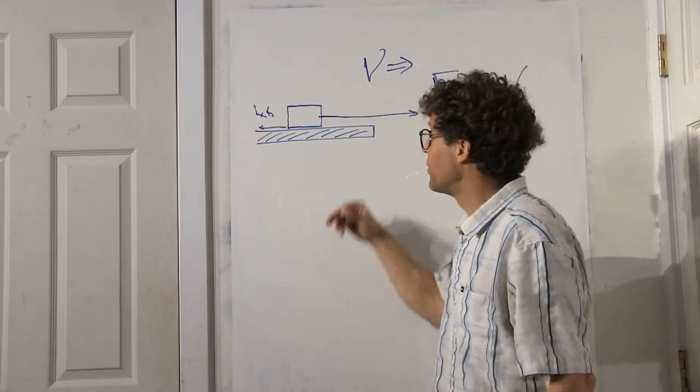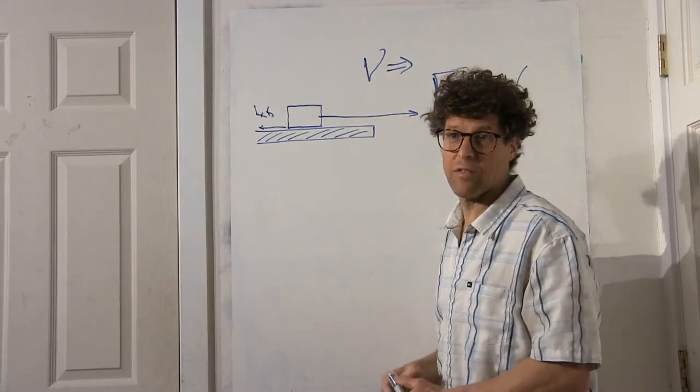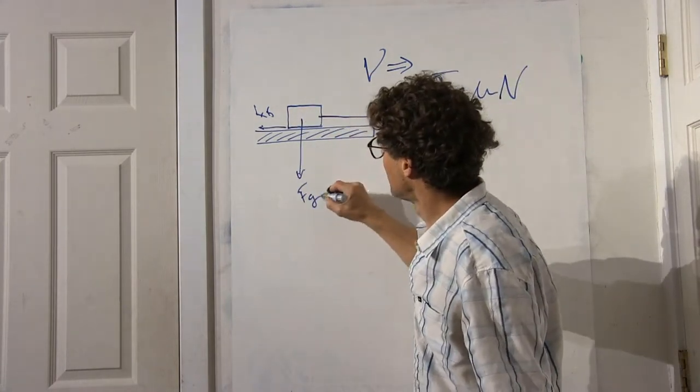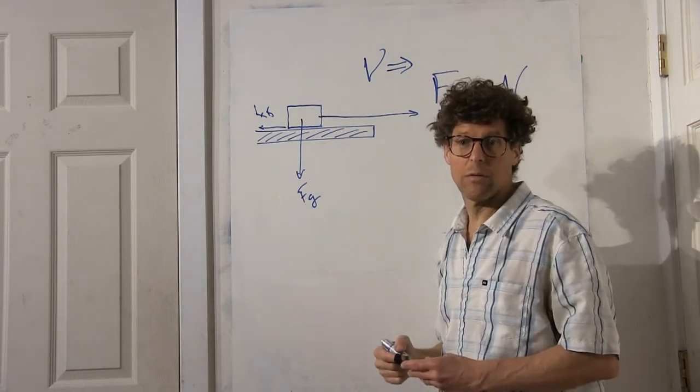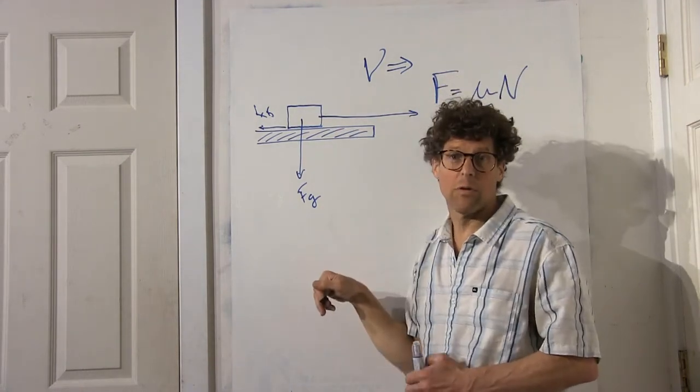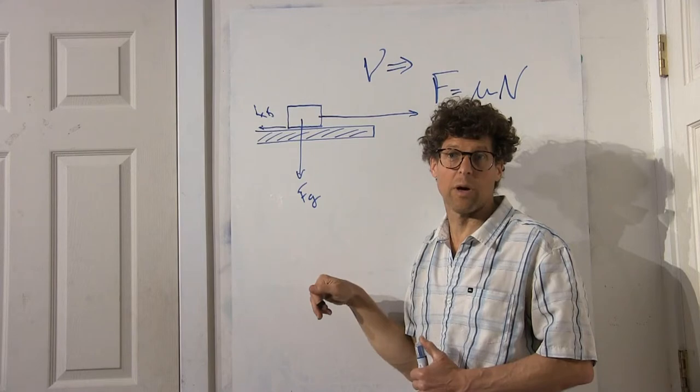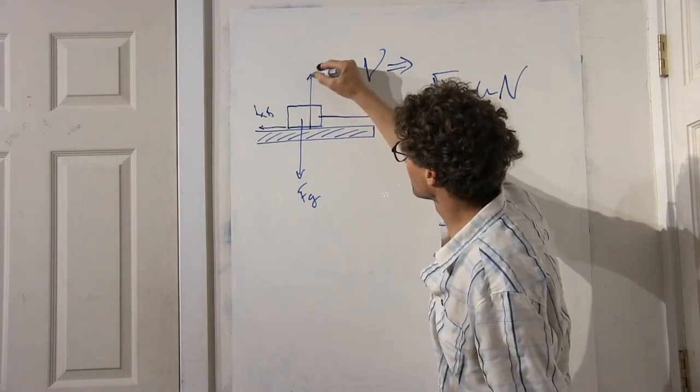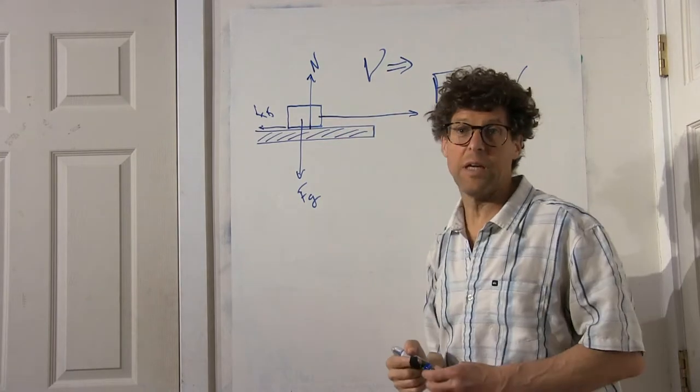The normal force could be determined by how hard I push down on this, but in the absence of anything pushing, we would recognize there's a force of gravity pulling down. Is this accelerating downward at negative 10 meters per second squared? No. If it's in equilibrium, the normal force must be equal and opposite.